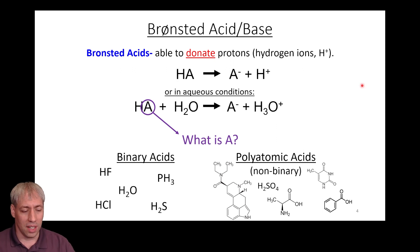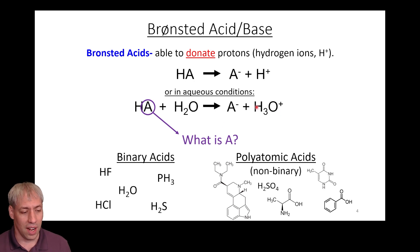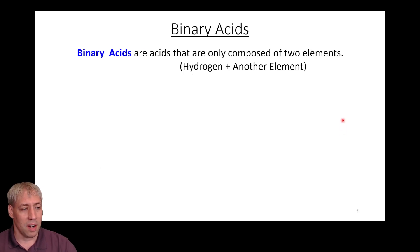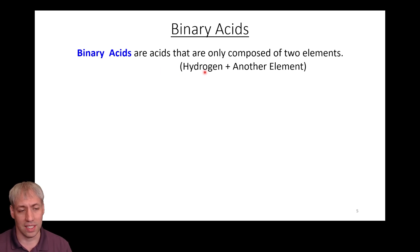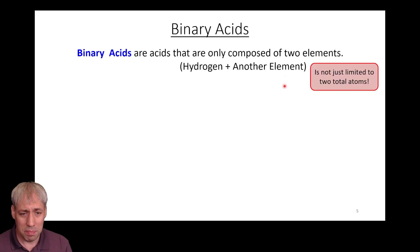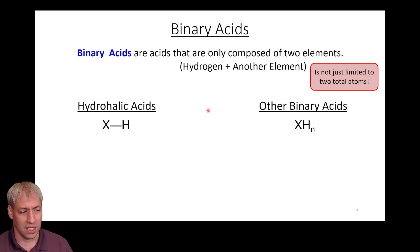There are two primary classes of Brønsted acids: binary acids and non-binary acids, also known as polyatomic acids. Binary acids — from the Latin root meaning 'two things' — are made of two types of elements. One has to be hydrogen, and the other is a different element. It doesn't mean just two atoms, just two kinds of atoms.